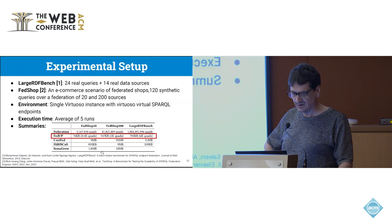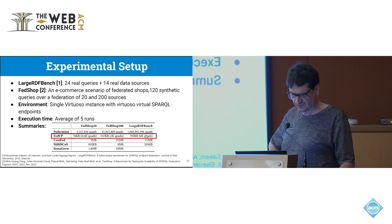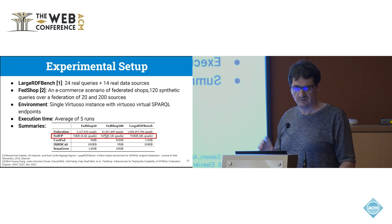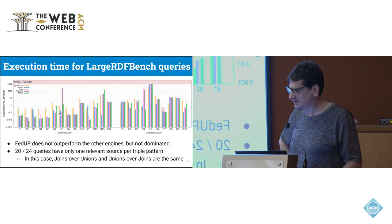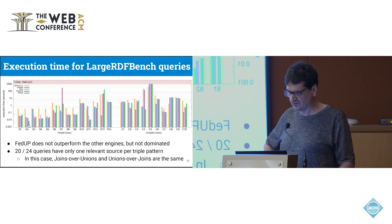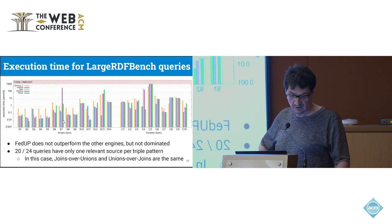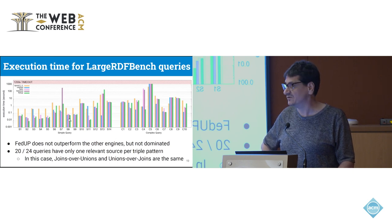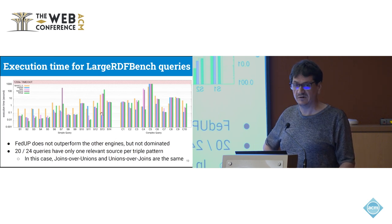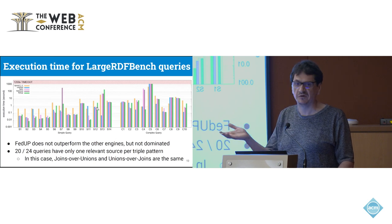Now time for experiments. We experimented on the two benchmarks in the domain: LargeRDFBench and FedShop. We just put here the summary size because we have the smallest summary. This is the result on LargeRDFBench. In X, we have the query. In Y, we have execution time. In green, this is our engine. And in blue, it is Cosfed, which is a quite good engine. And on the LargeRDFBench, it's so-so. We are not better than the others. In fact, Cosfed is better than us on many queries. And it's normal because there is just one way to execute queries on LargeRDFBench. So it makes no difference to have union-over-join or join-over-union. They have the same plans.